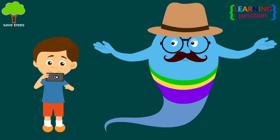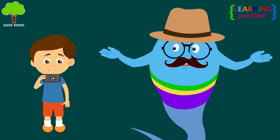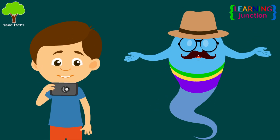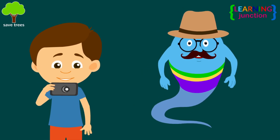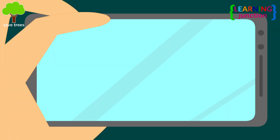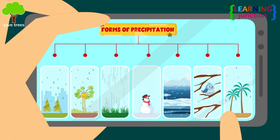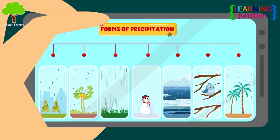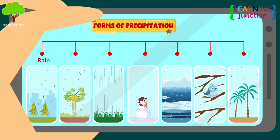Oh, you have prepared a chart. Can you show it to your friends? Forms of precipitation: Rain, Drizzle, Shower, Snowfall, Sleet, Freezing rain, and Virga.